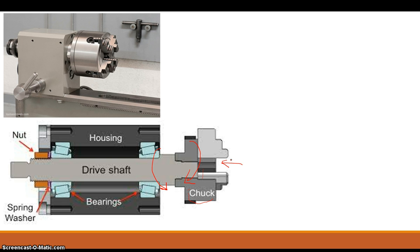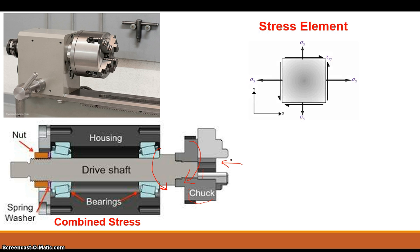How would you go about designing to select the right material, heat treatment, or shaft diameter for a lathe? You'd look at combined stress, and you'd take into account something called a stress element. A stress element is a tool — a concept we use when designing around combined, more complicated stresses, trying to understand their different influences, where the stress is at its maximum shear, its minimum principal stress, and its maximum principal stress.